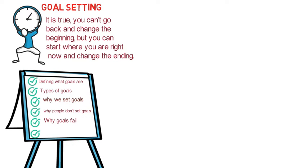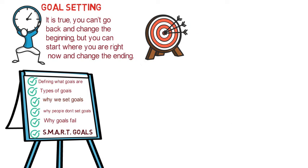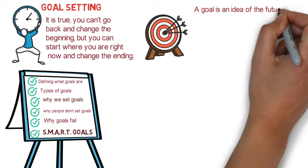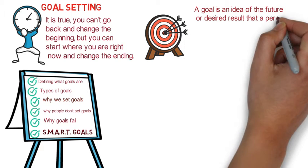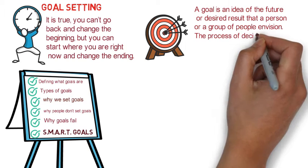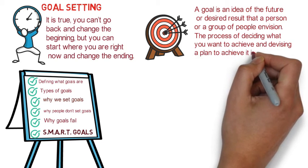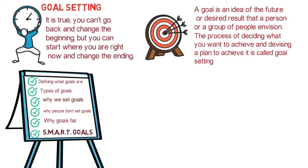To begin with, what are goals really? A goal is an idea of the future or desired result that a person or a group of people envision. The process of deciding what you want to achieve and devising a plan to achieve it is called goal setting.